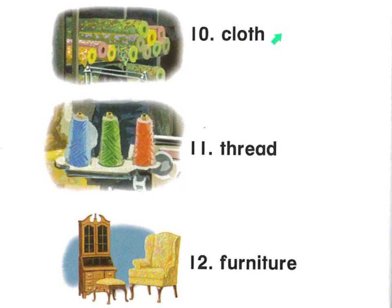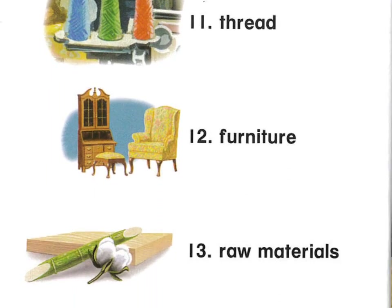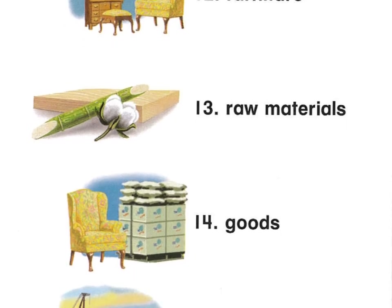The South is known for growing cotton, which can be made into cloth or fabric — first made into thread, then dyed, then made into cloth. The South is also known for furniture, using both the cloth that's made and the lumber that's available. The raw materials you see here are sugar cane, cotton, and lumber.